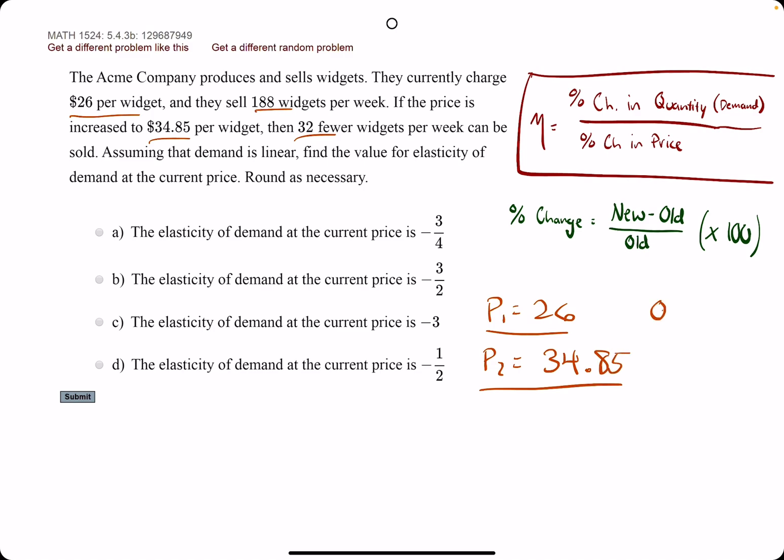Now, if we just have our initial quantity and our new quantity, our old and new Q1, corresponding to $26 was 188 widgets.